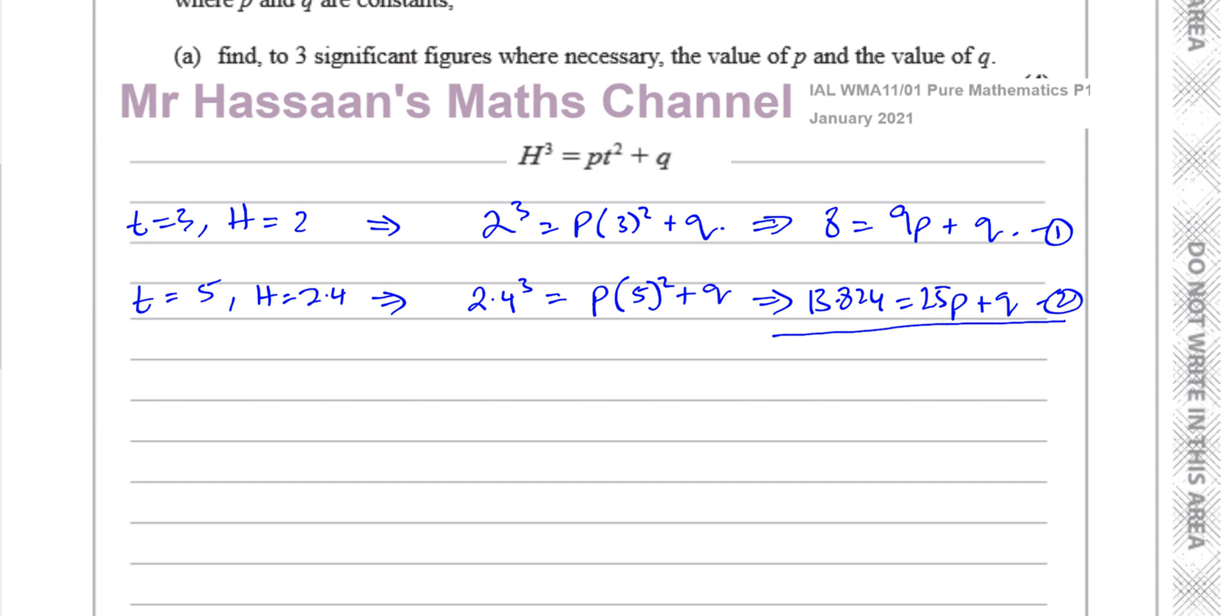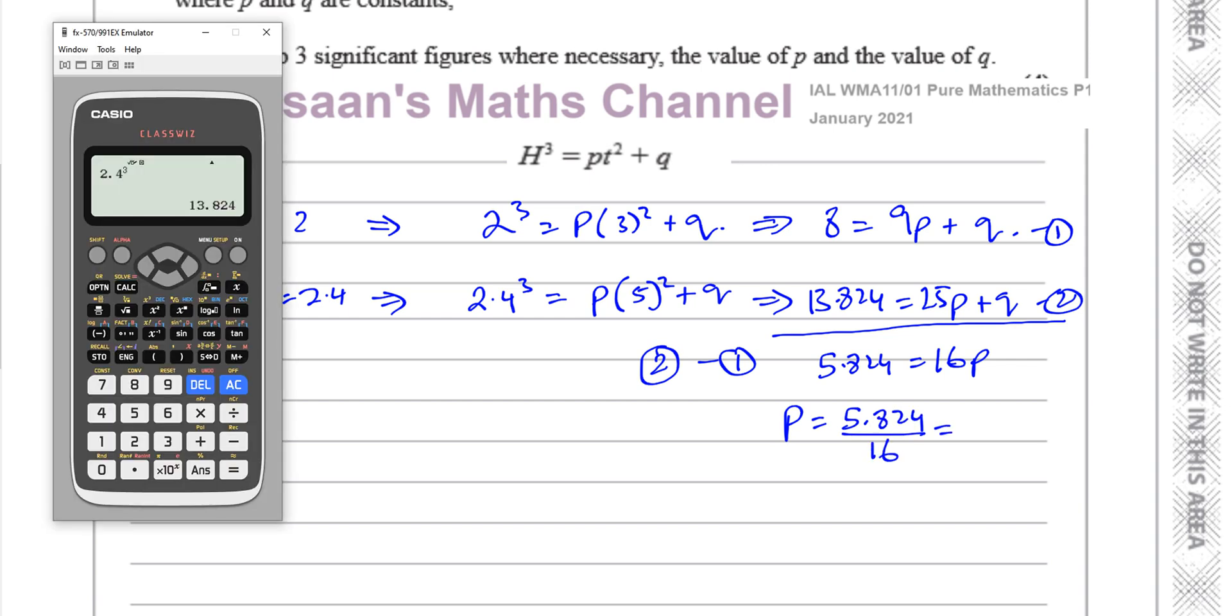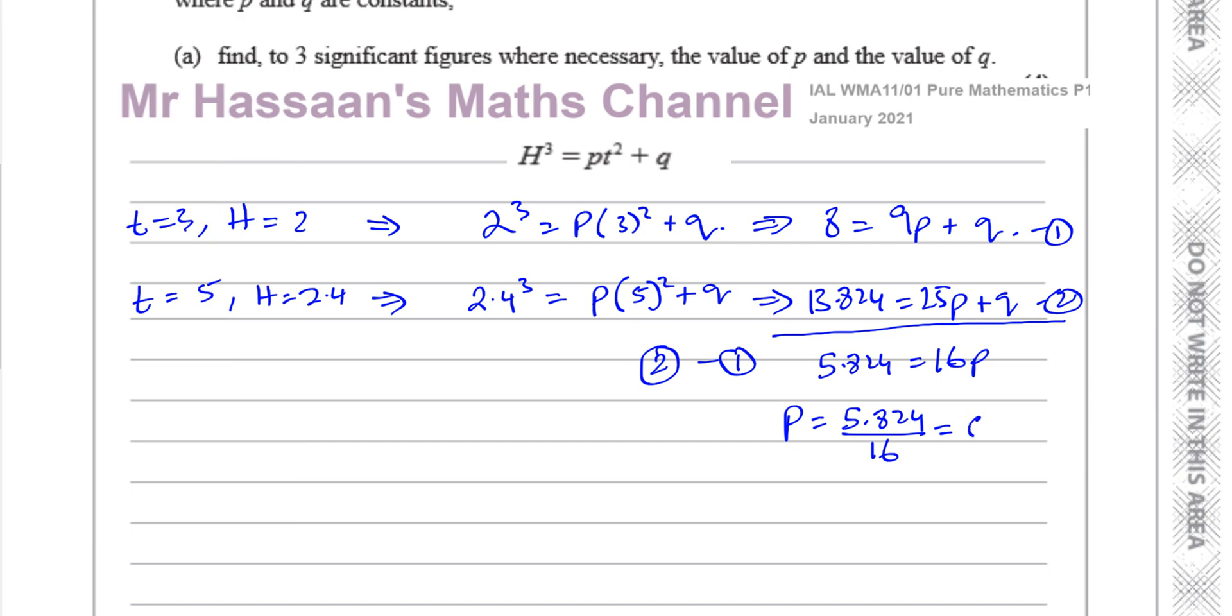If I subtract these equations, the q will disappear. I think doing it this way will be more sensible. 2 minus 1, that gives me 13.824 minus 8, which is 5.824 equals 25p minus 9p, which is 16p. And the q's are eliminated. So now we can find what p is by dividing 5.824 by 16. So we're going to have 5.824 divided by 16, which gives us 0.364. So we know that p is equal to 0.364. That's one of the answers. It says to three significant figures, and this is three significant figures, so we don't need to do any rounding here.